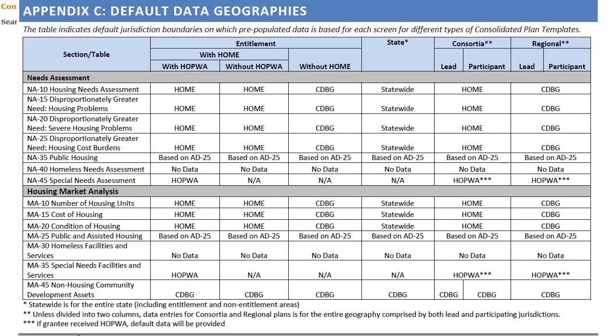The housing-related default data in the Lead Entity's template is based on the entire Home Consortium geography. On the other hand, the template for each grantee — whether the Lead Entity or a participating CDBG grantee — will include the non-housing data only for its CDBG boundaries. If you want to include the same data for the Lead Entity or another member of the Home Consortium, you can use the additional content links found below each table.